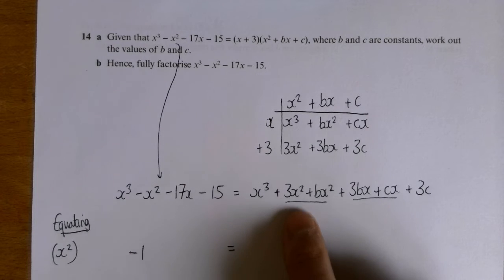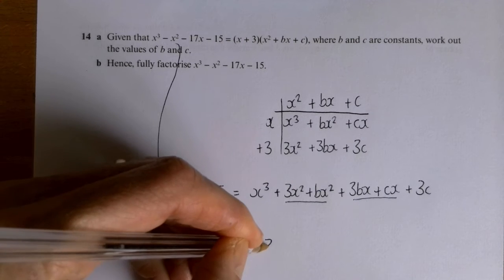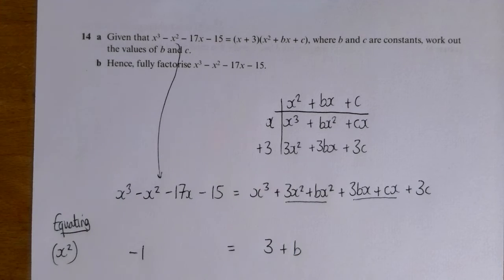Well, I've got three x squareds there and b x squareds there. So look how I write that. So all I'm doing is writing the number of x squareds on the left hand side and the right hand side.